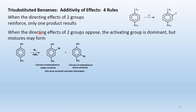Rule 2: when two directing effects oppose, the activating group is dominant, but mixtures may form. Example with two activating groups — a strong activator (hydroxyl) and a weak activator (methyl): the para position is unavailable (occupied), so bromination occurs ortho to each group. Since hydroxyl is the stronger activator, the major product results from bromination ortho to hydroxyl; the minor product is ortho to methyl. Rule 3 example — activator and deactivator together: activators outweigh deactivators. The methyl group directs ortho and para (ignore the nitro group). However, substitution rarely occurs at a carbon between two meta-di-substituted sites because it is too hindered.